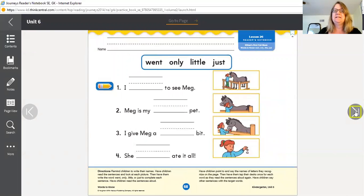The second page you're doing, page 68, you have four choices: went, only, little, just.